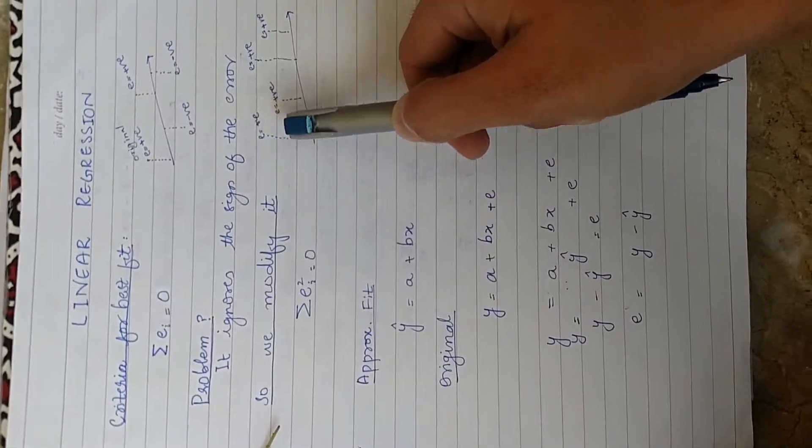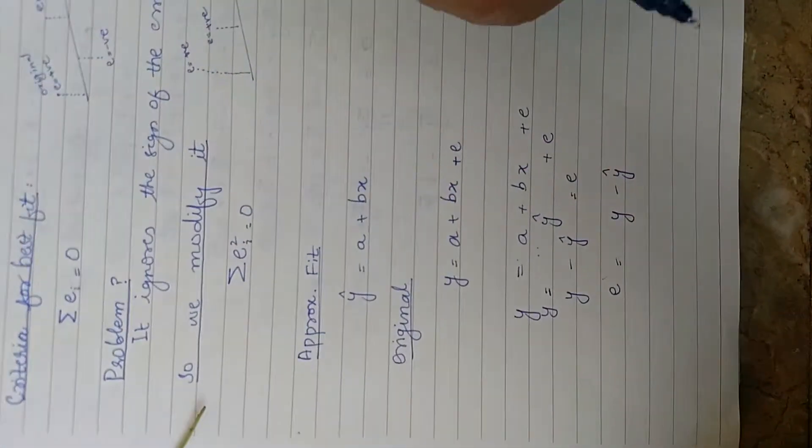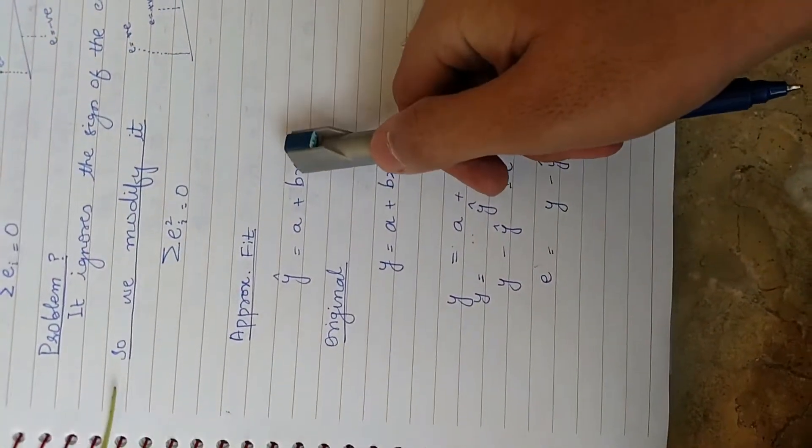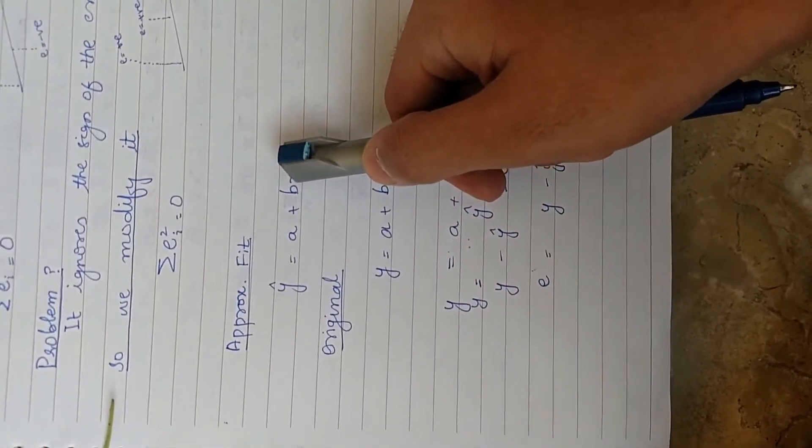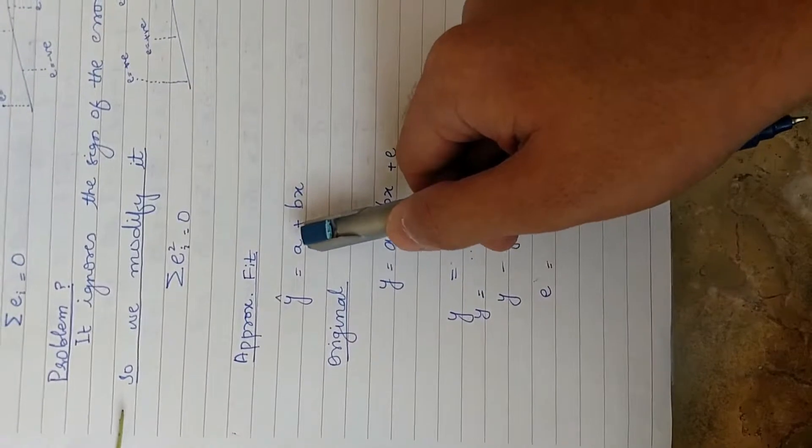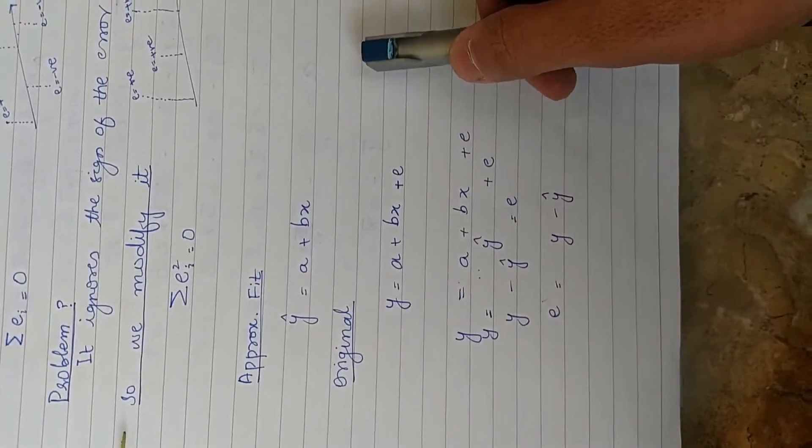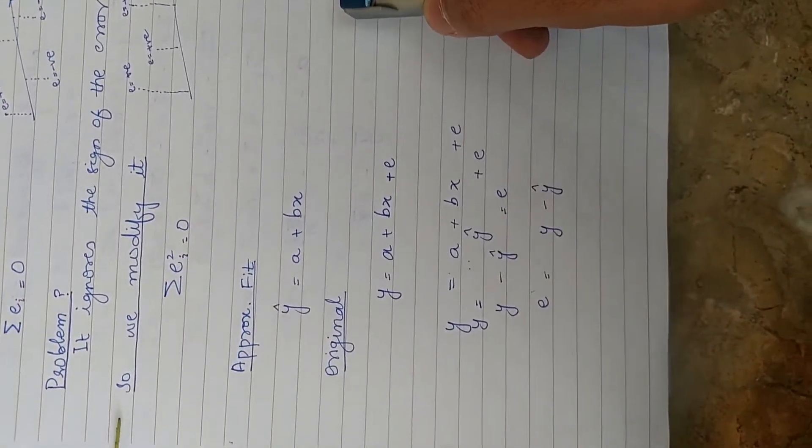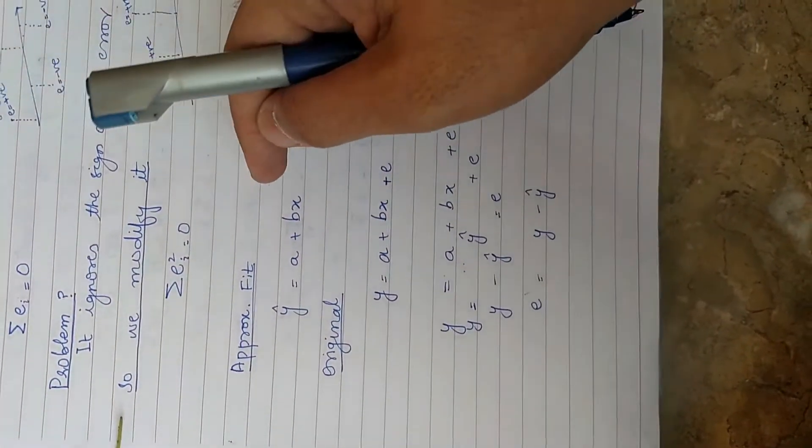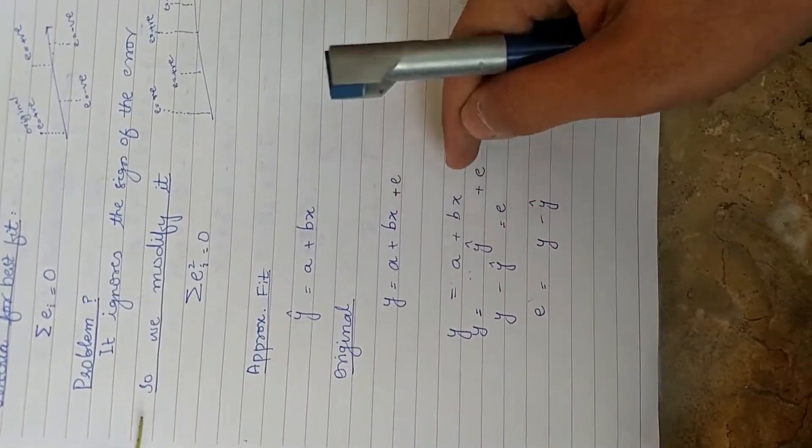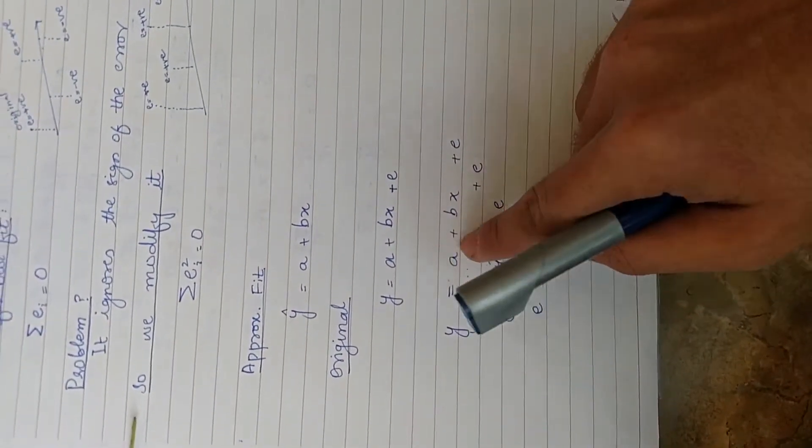Now this is the criteria for best fit. Going on, we have the approximate formula: the equation of line approximate y cap equals a plus bx, and the original one is y equals a plus bx plus error. Now we are going to substitute this line into this one. This a plus bx is y cap, so after this we have got a formula for error.